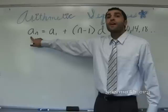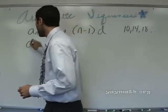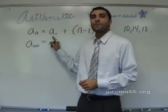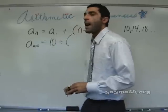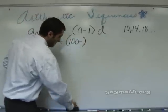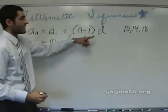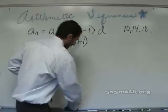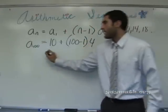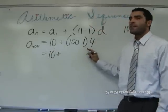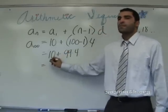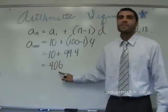So let's go ahead and do it. If I wanted the hundredth term, that would be a100. The first term in this sequence is 10. So: a100 equals 10 plus (100 minus 1) times 4. That's 10 plus 99 times 4, which is 10 plus 396, which equals 406. That's the 100th term in the sequence.